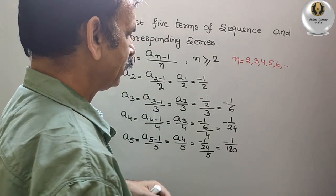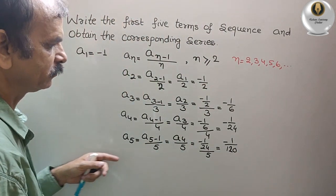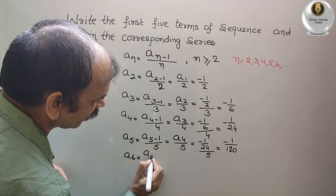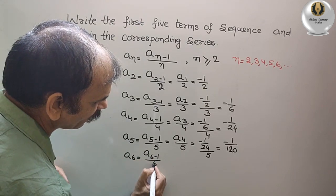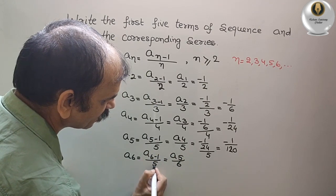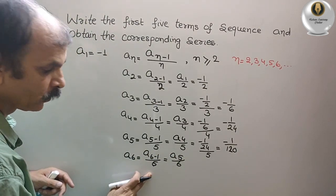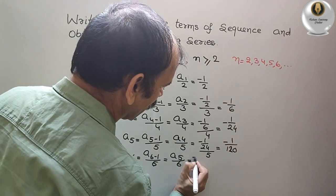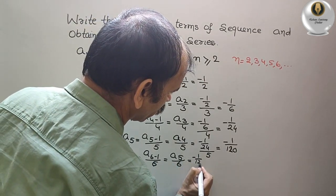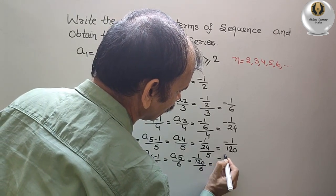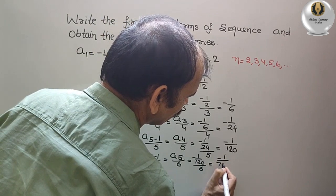Next comes your a6. So a6 is equal to a6 minus 1 by 6. That is equal to a5 by 6. This is equal to, a5 is minus 1 by 120, by 6. That is equal to minus 1 by 720.